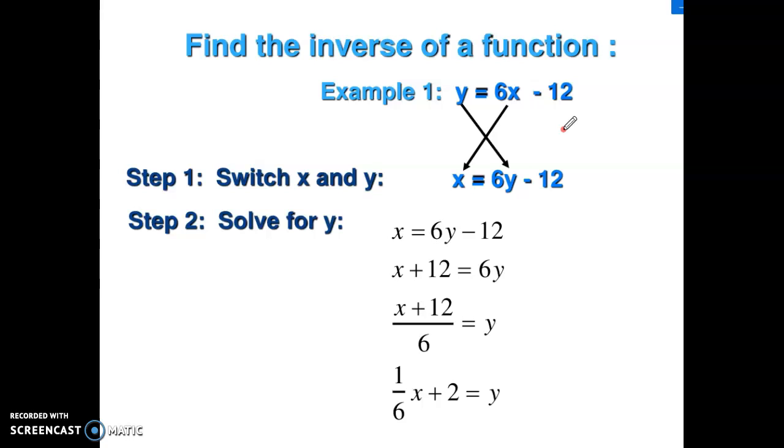Input, output gets switched because the perspectives are changing because we're now standing where we ended up with on the original function and we're asking, how do we get back? What's the directions to get back to what we started with? So one of the first things we're going to do is we're going to switch the x and y's around and then we're going to solve for y.